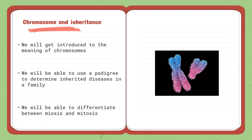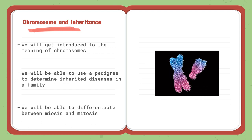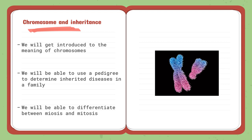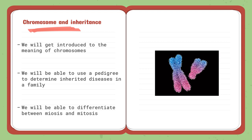We will also differentiate between meiosis and mitosis. As you know, there is a cell cycle that can be either meiosis or mitosis, and there are differences between the two cycles. We will get to know more about them and talk about each cycle separately.